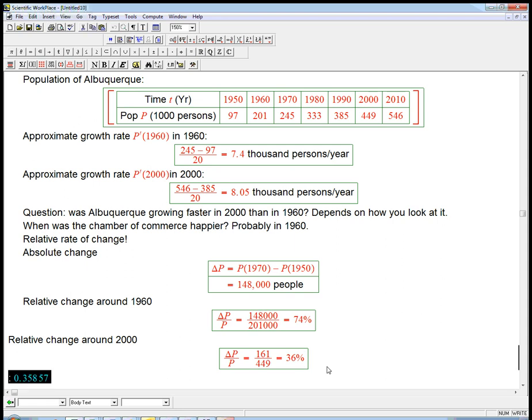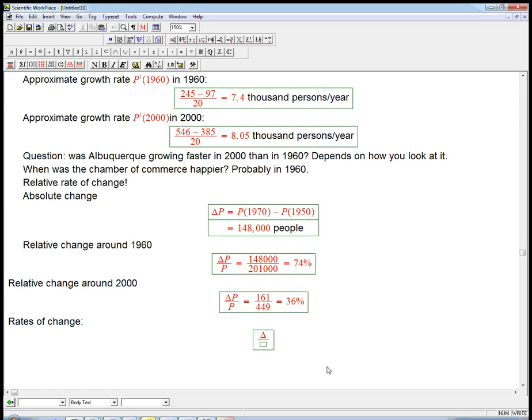Well, what about rates of change? That's things like delta P over delta T. Absolute rate of change is if you have to work with secant lines and approximations, that's the kind of calculation we were doing here, exactly this calculation: 7.4 thousand persons per year or 8.05 thousand persons per year. And that leads to the derivative when we take the limit. When we look at the tangent slope instead of the secant slope, we're used to that, we're getting real good at that.